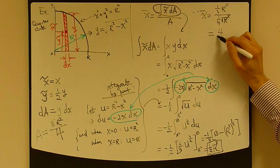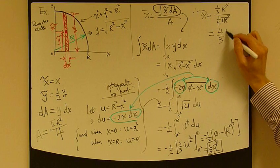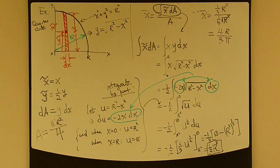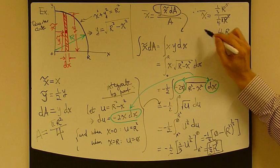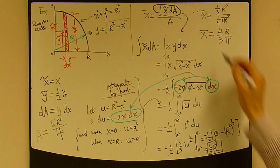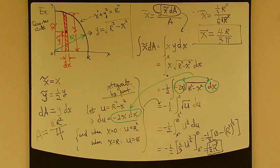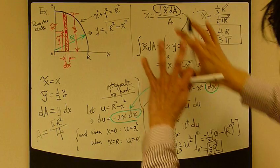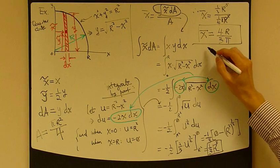So 4r over 3 pi, that's your x bar. This, do the exact same thing for y bar, okay?